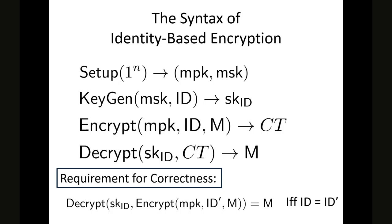Next, I explain Identity-Based Encryption. IBE consists of several algorithms. In IBE, a secret key and a ciphertext are each associated with some identity, and decryption is possible if and only if these identities are the same.